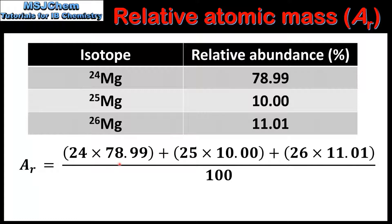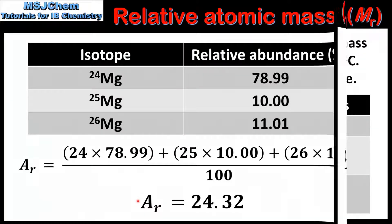We then add these together and divide by 100 to get the mass of one atom. Using these values we get a Relative Atomic Mass for magnesium of 24.32. Note that because it's a relative scale there are no units.